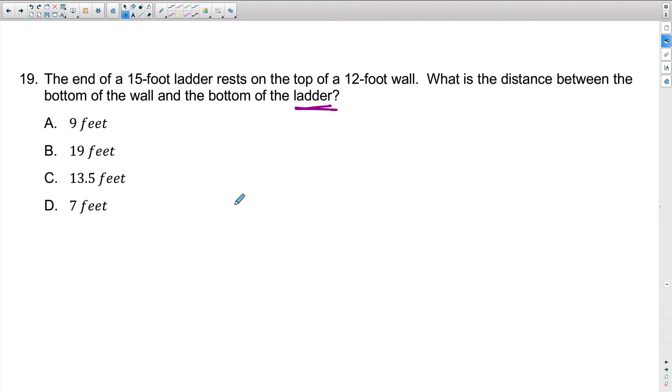What you're going to want to do is draw this out and keep the Pythagorean theorem in mind. Remember, the Pythagorean theorem is a squared plus b squared equals c squared.